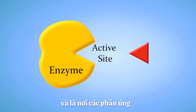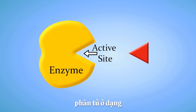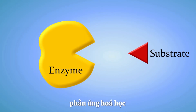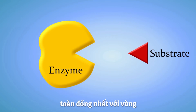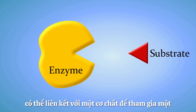The active site is where the reaction happens. On the right we have a molecule in the shape of a triangle — it is called the substrate. This is the molecule that will undergo a chemical reaction. Notice that the substrate fits perfectly into the active site of the enzyme, just like a puzzle piece.